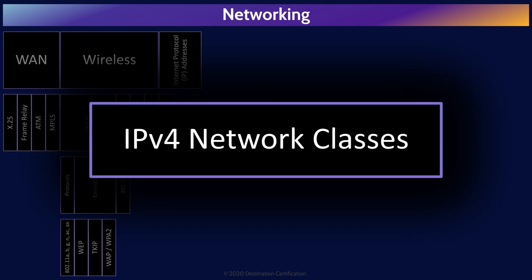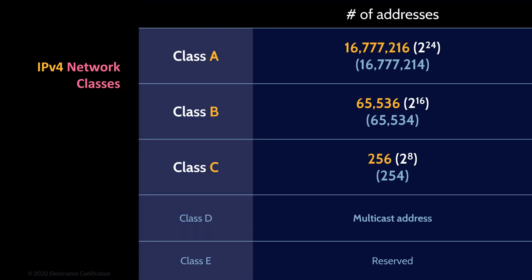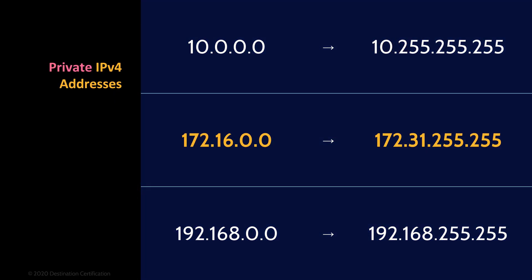The IP version 4 addressing system is divided into five classes. You should be able to recognize these five classes and the number of addresses in each. Class A networks provide 2 to the power of 24 addresses, which is 16,777,214 usable addresses. Class B provides 2 to the power of 16 addresses, which is 65,534 usable addresses. Class C provides 2 to the power of 8 addresses, which is 254 usable addresses. Three ranges of addresses have been reserved for use in private networks: the 10.0 range, the 172.16 to 172.31 range, and the 192.168 range. Any IP addresses in these three ranges are not routable on the internet.